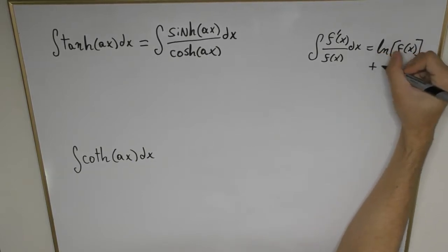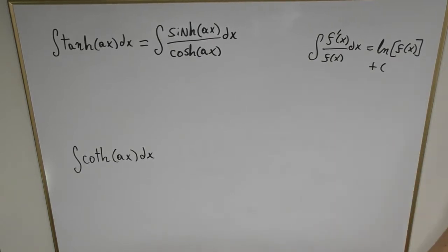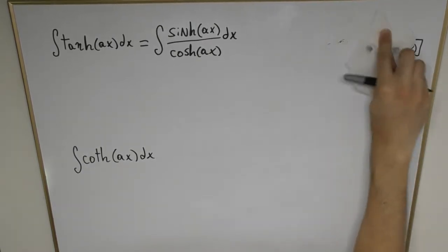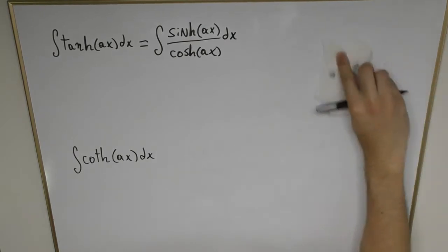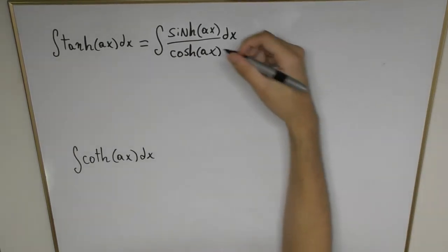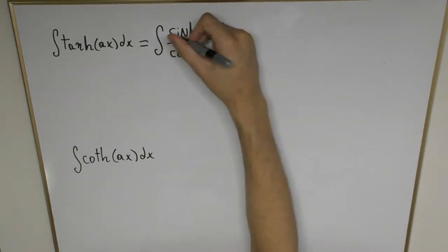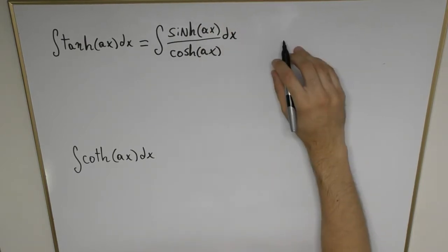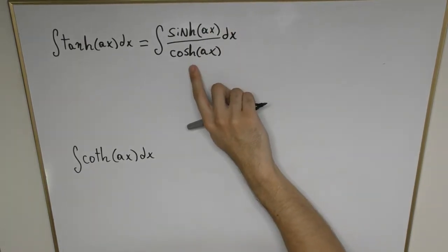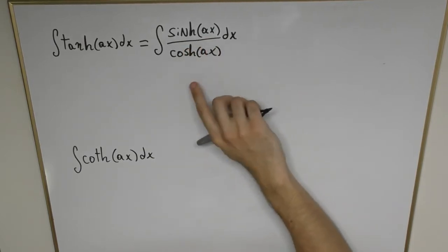We're going to use that formula that we derived many videos ago and we're going to apply it to this particular example. We notice that the top is going to be exactly the derivative of the denominator but there's a factor of a that is going to be missing.